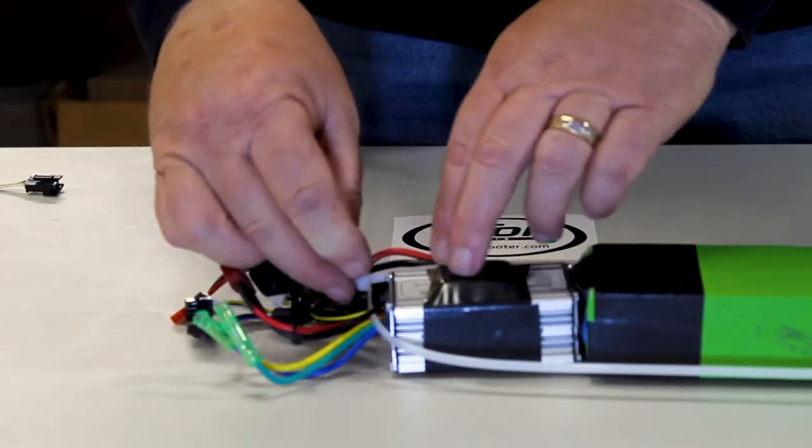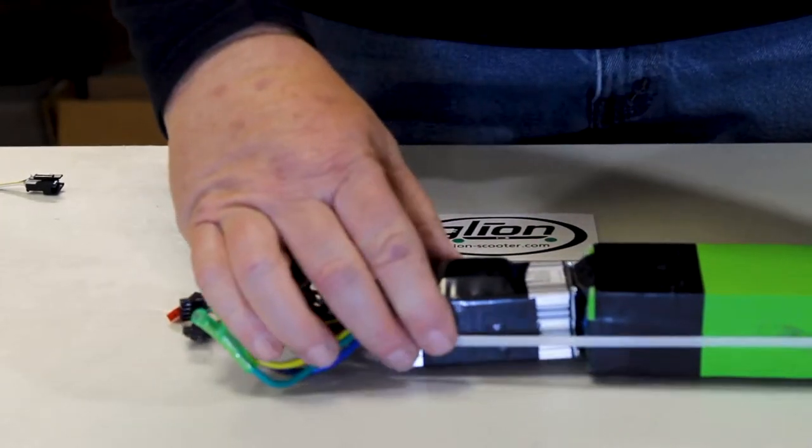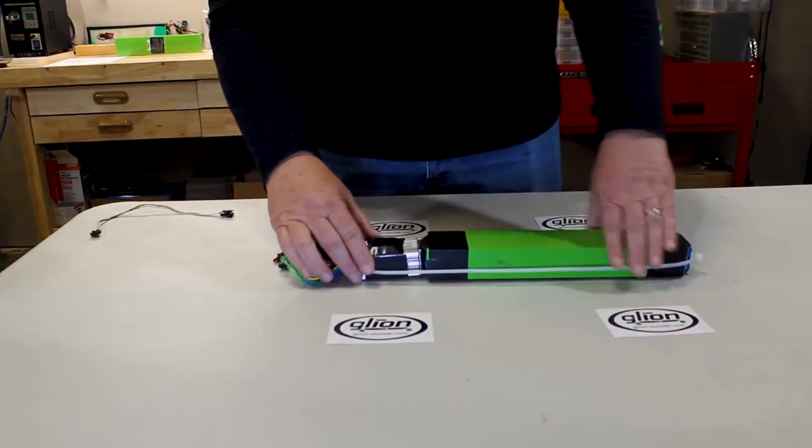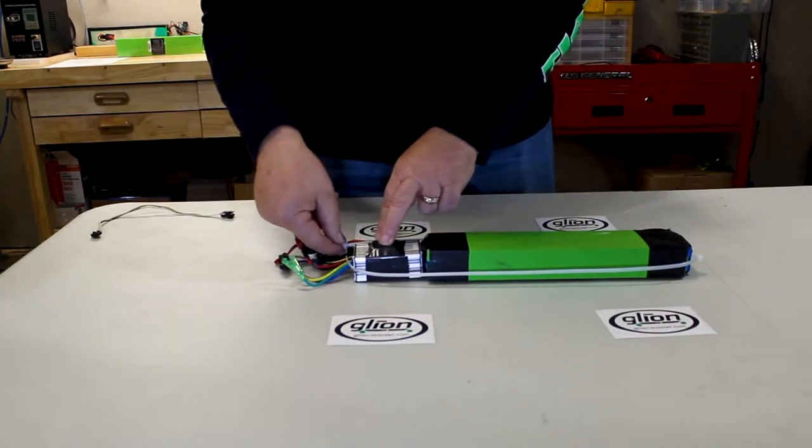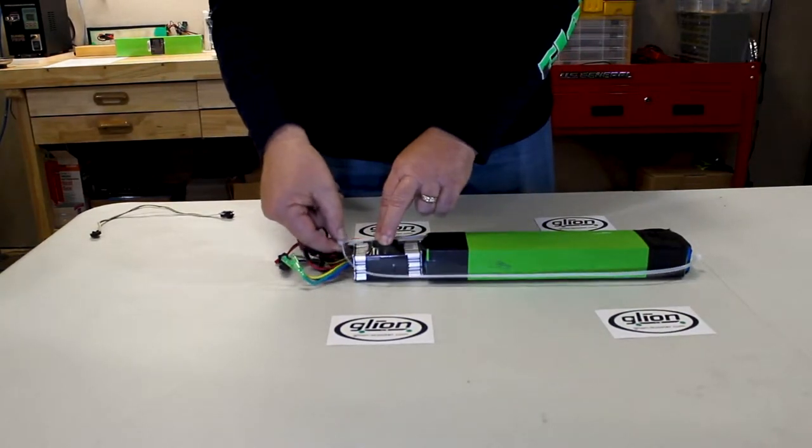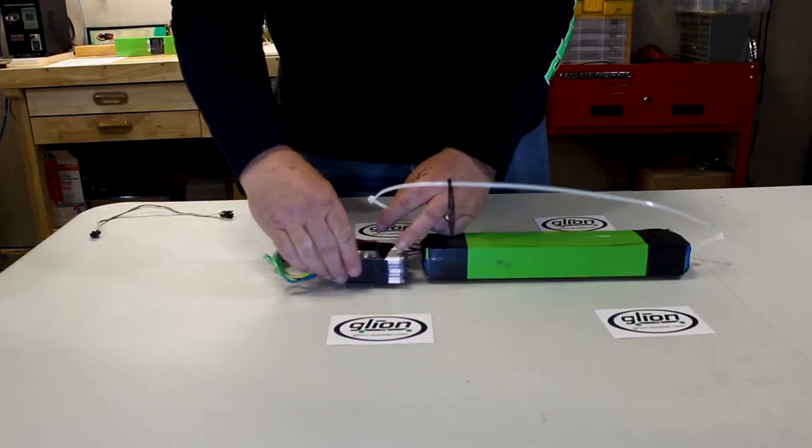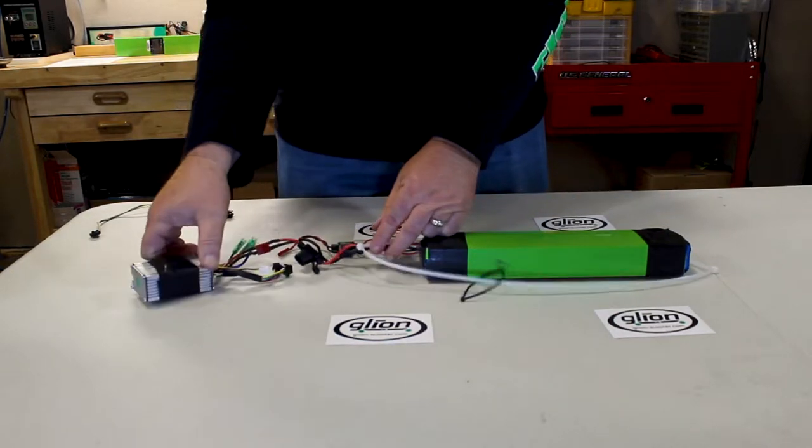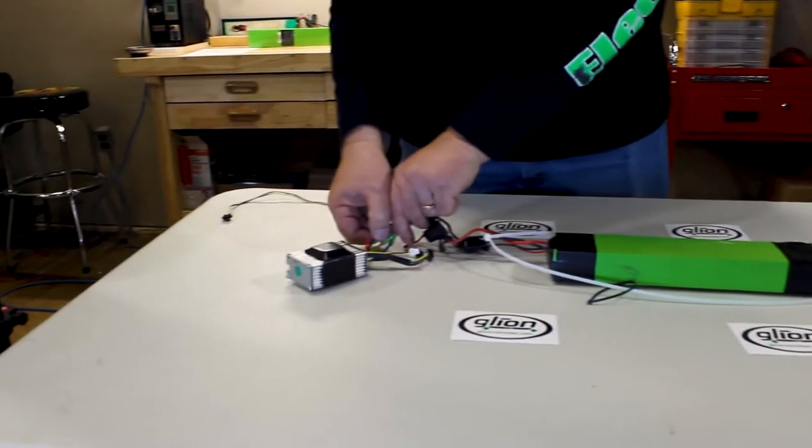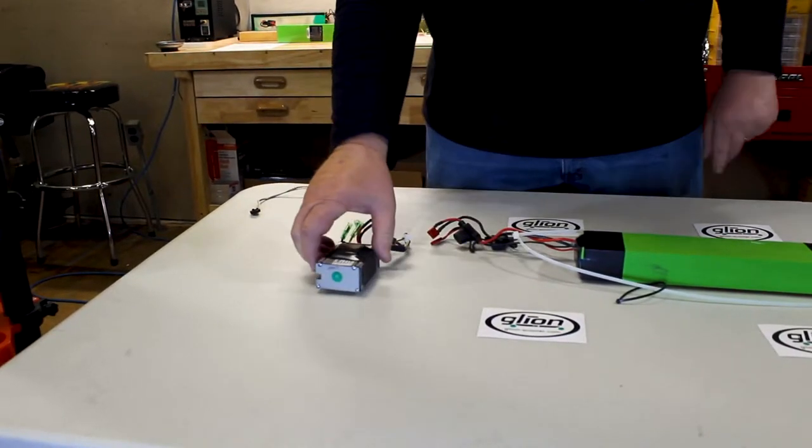There's one long zip tie. It holds everything kind of together when you put it into the frame. If you need to remove the controller, you can lift that zip tie up and the controller will come out. And you'll disconnect all the wiring from the motor controller.